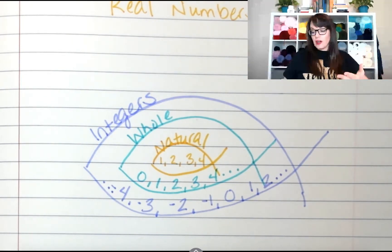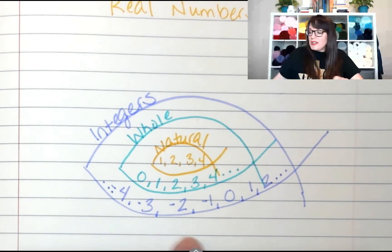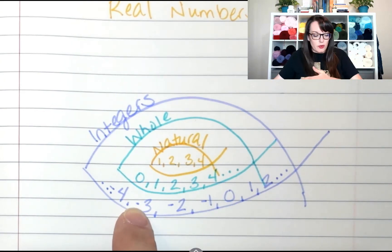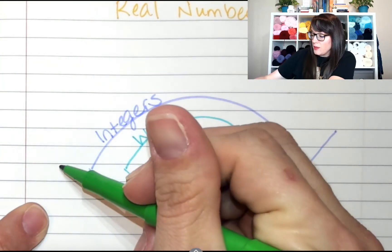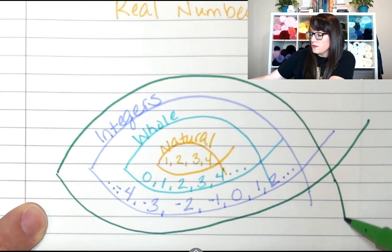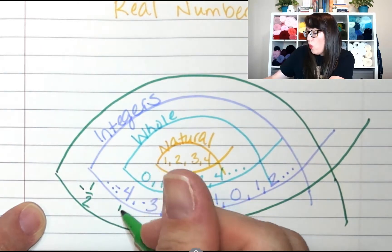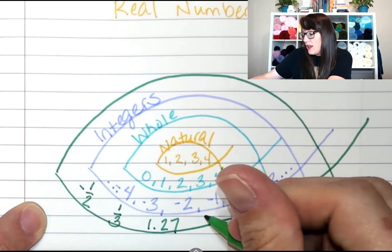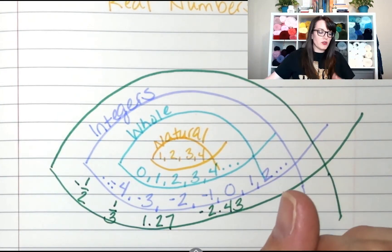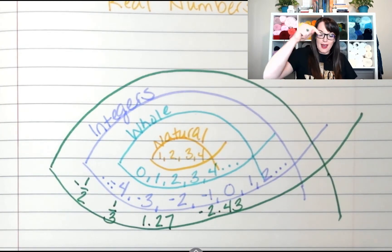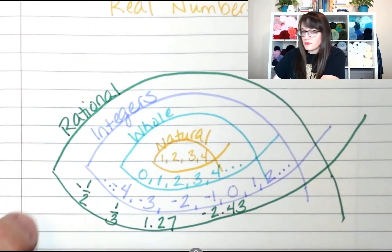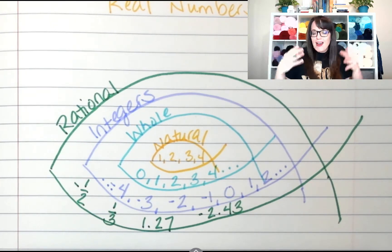Now that we're in seventh grade, we're going to get to the bigger fish. At this grade level we deal with the numbers that come between integers — negative fractions and negative decimals. We call those rational numbers. Our seventh grade fish has numbers like negative one half, one third, 1.27, negative 2.43. Rational numbers are basically any number that you can place on a number line.